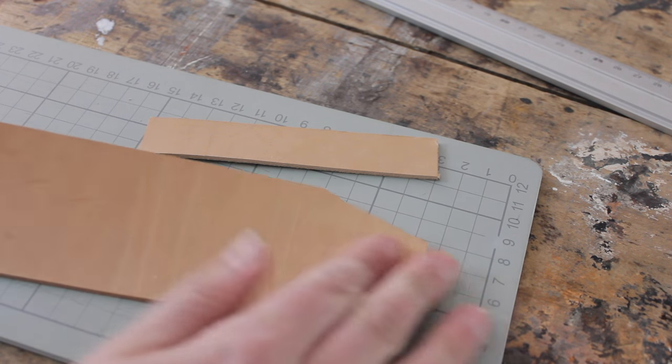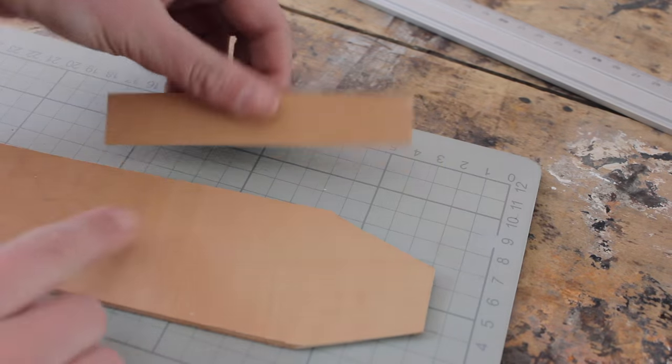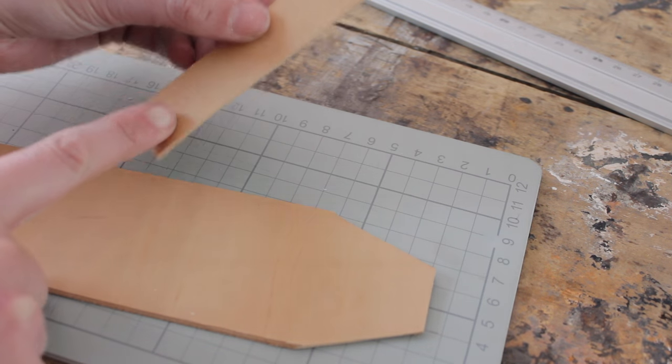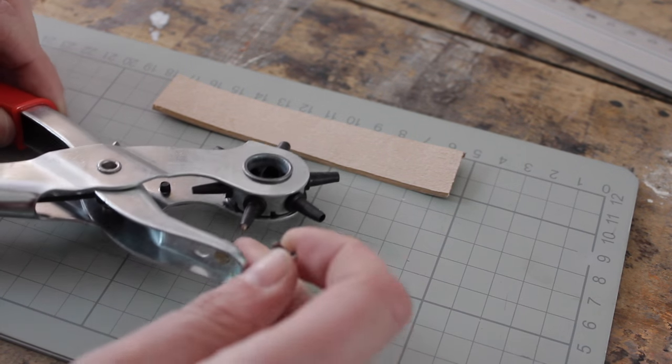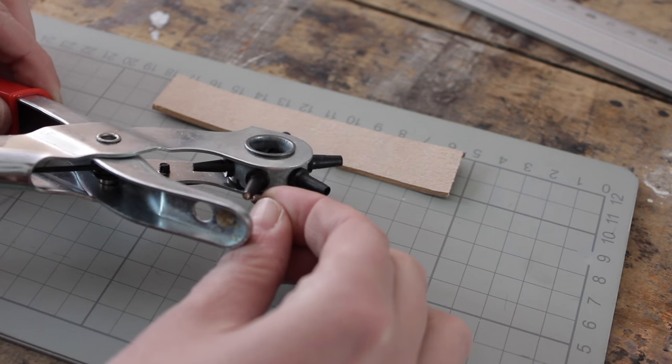So now we have the cuff cut out, but we also need a handle. This is twice the height of your cuff, so 12 centimeters for me and two centimeters wide. On your hole punch, select the size as the same size as your rivet.